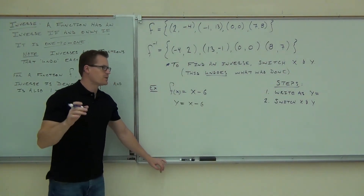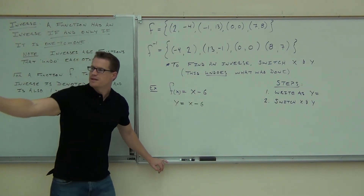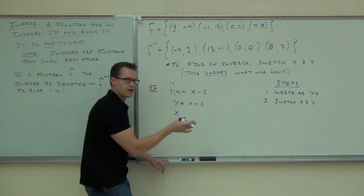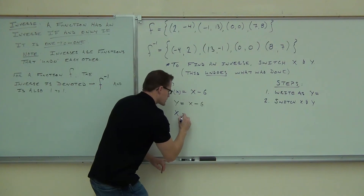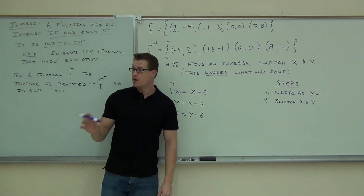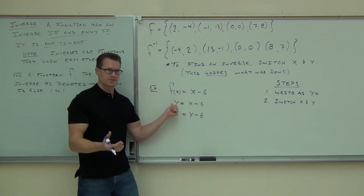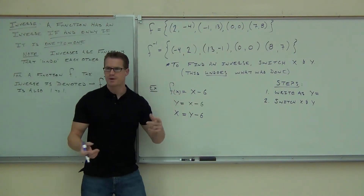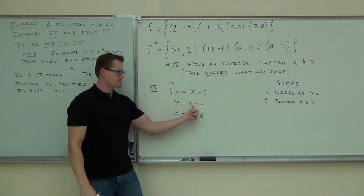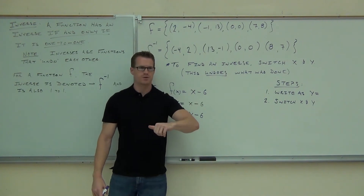Can somebody read me what I should have down on my paper? Instead of Y, I now have X — that's all I'm doing, switching X with Y. Instead of X, I have Y. The minus six stays there. I'm not changing anything except: F of X becomes Y first, then we switch — Y's become X's, X's become Y's.